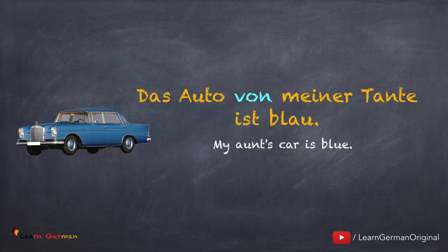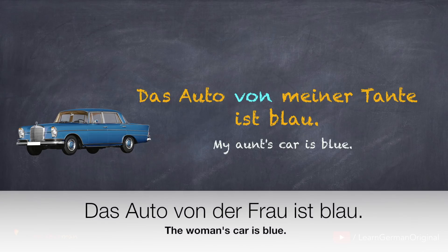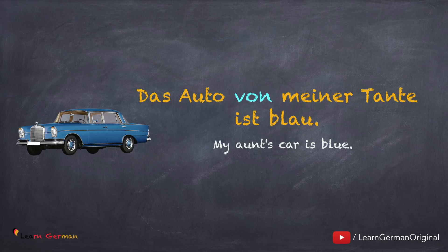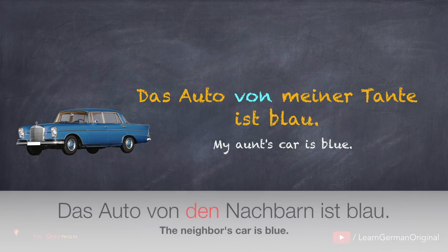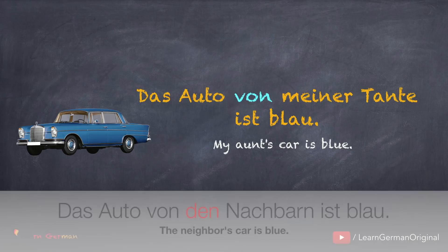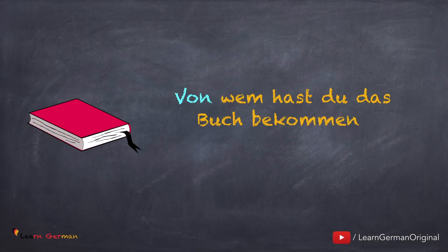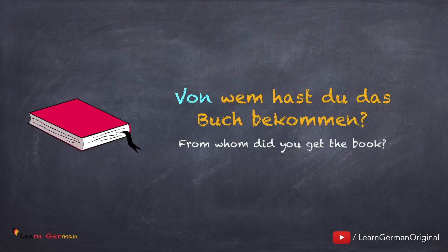If you have a normal article, you would say 'Das Auto von der Frau ist blau.' DIE Frau will change to DER Frau in Dativ. The plural article DIE changes to DEN — 'Das Auto von den Nachbarn ist blau.' Let's look at the next example: 'Von wem hast du das Buch bekommen?'